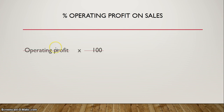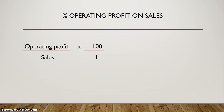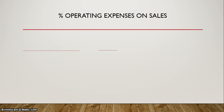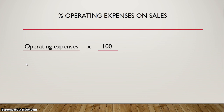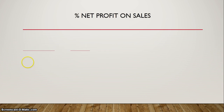For percentage operating profit on sales, it is your operating profit over your sales times 100 over 1. Another indicator is your operating expenses — remember, the higher the expense, the lower the profit, so we want to keep our operating expenses to the minimum. That is operating expenses over sales times 100 over 1. And the final one is your percentage net profit on sales: net profit over sales times 100 over 1.